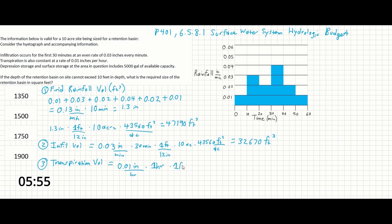times 1 foot over 12 inches, times 10 acres, times 43,560 feet squared per acre. And that's going to be 363 feet cubed.